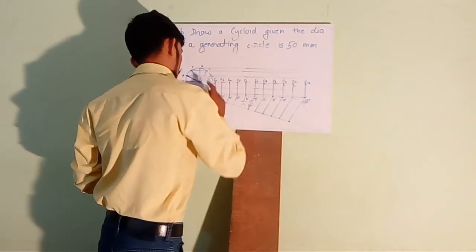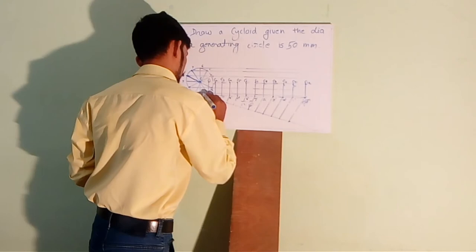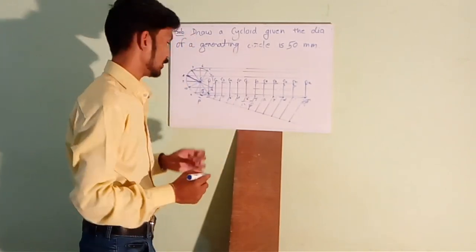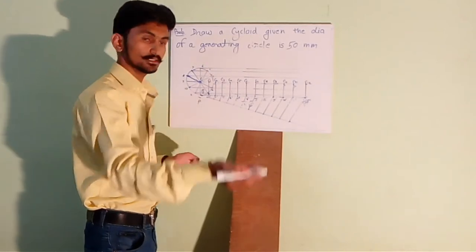This will be over here. Okay, and this point will be P1, our point on the required cycloid.